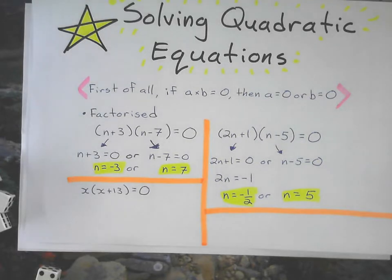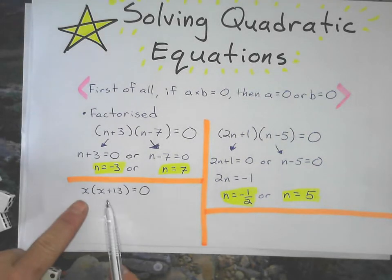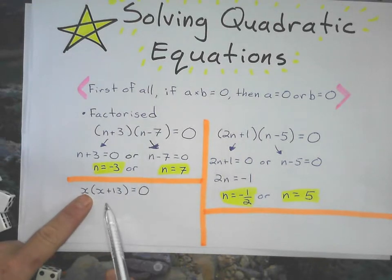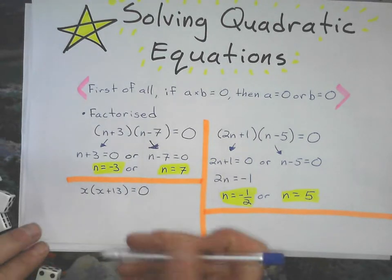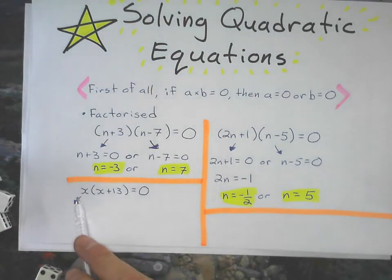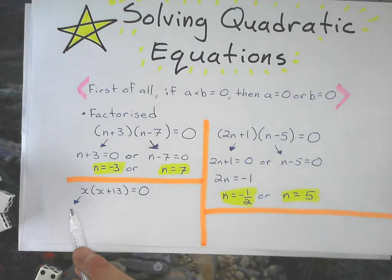Our third example here is a factorized quadratic as well, it's just not two binomials like this one is. I still set each factor to zero, but when I set x as a factor to zero, it just becomes the solution.